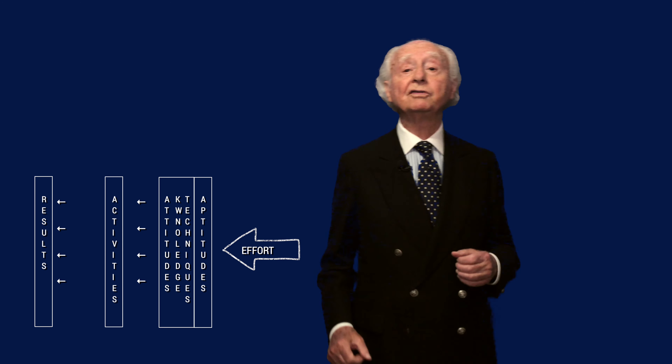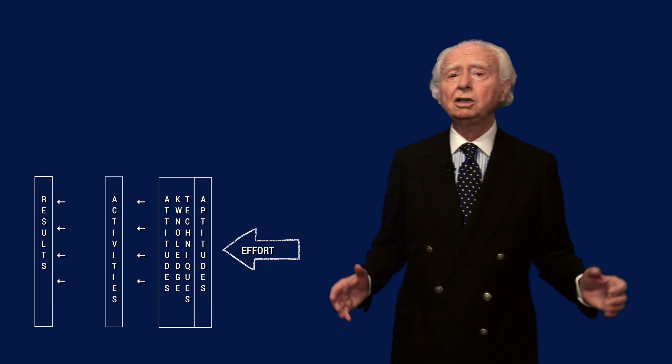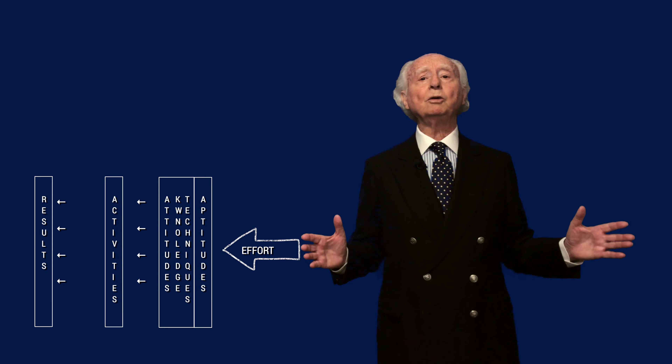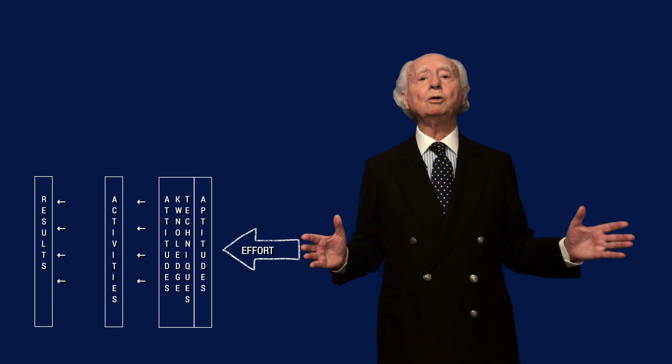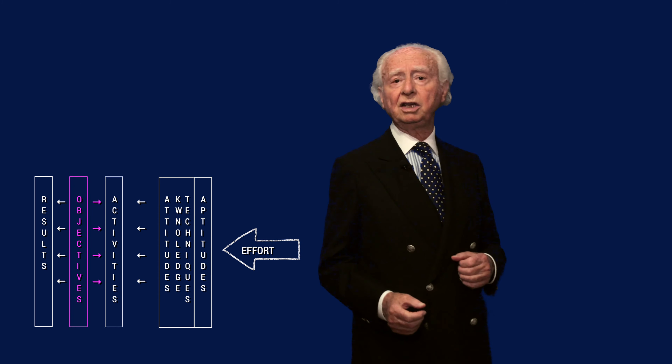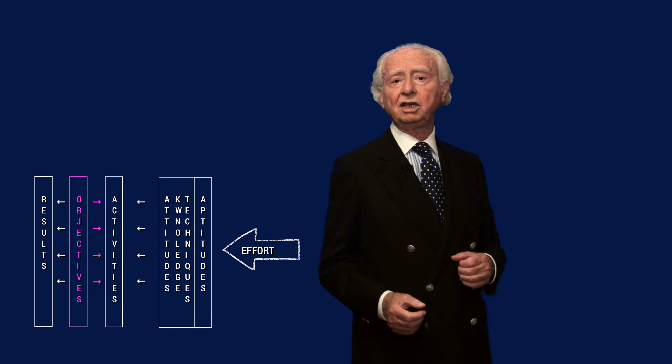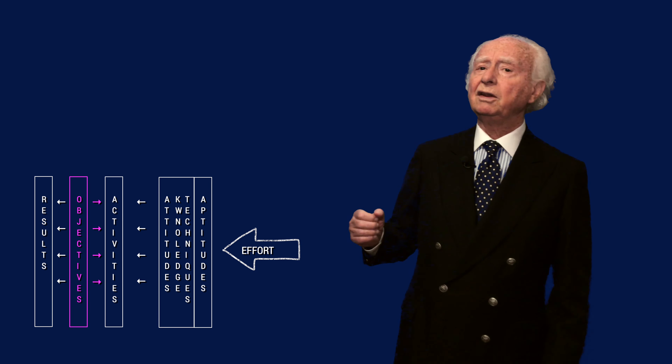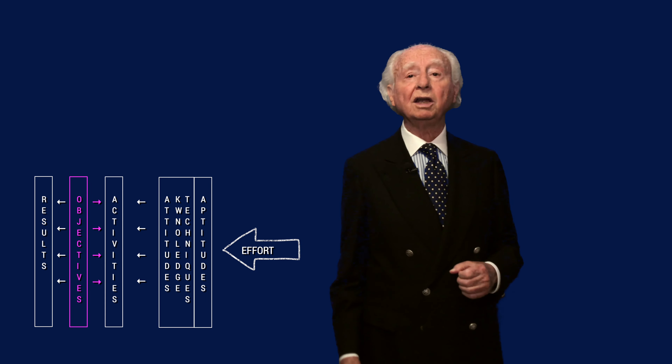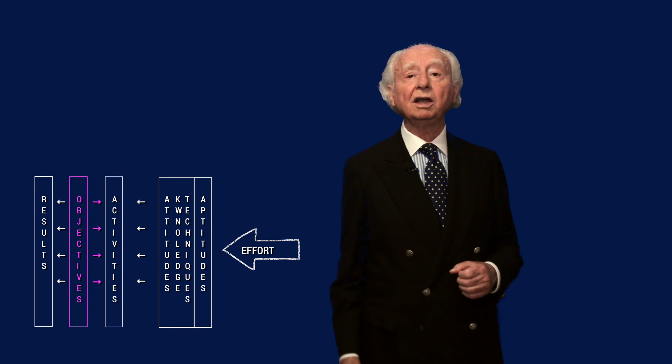This will lead him to achieve the results, but for the results to be at the necessary and desired level, it is necessary to place some well-studied intermediate objectives between the behavior and the results — oriented toward the behavior and performance of our collaborator — which will influence and order that behavior, so that the collaborator will be able to achieve the desired results.